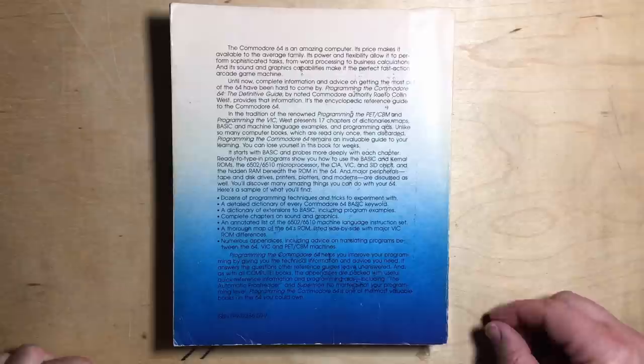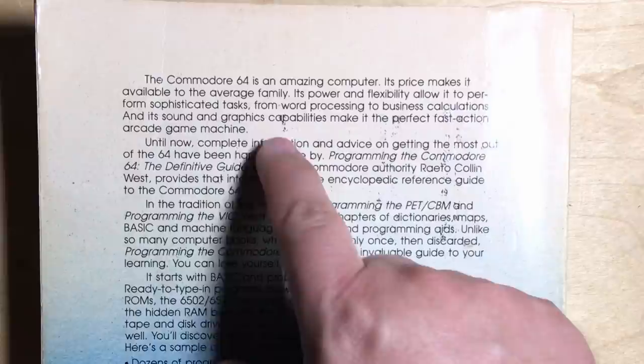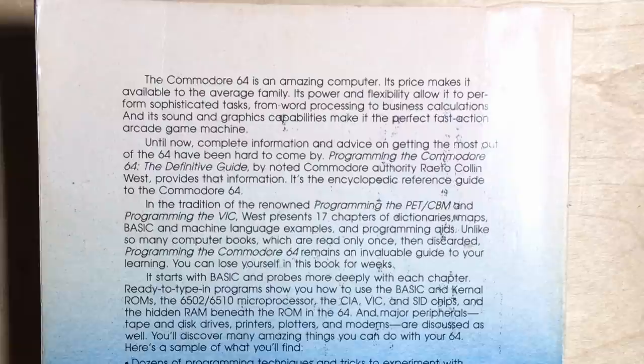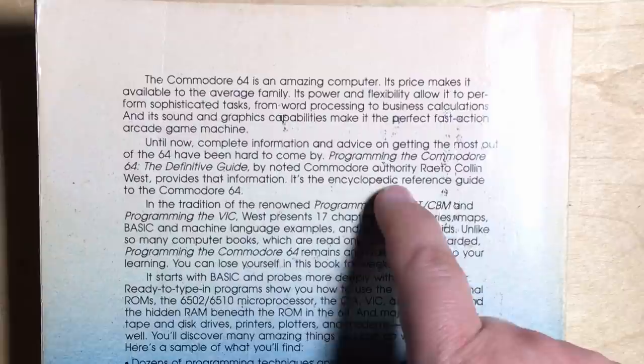Take a look at the back cover. The Commodore 64 is an amazing computer. Its price makes it available to the average family. Its power and flexibility allow it to perform sophisticated tasks, from word processing to business calculations, and its sound and graphics capabilities make it the perfect fast-action arcade game machine. Until now, complete information and advice on getting the most of the 64 have been hard to come by. Programming the Commodore 64, The Definitive Guide by noted Commodore Authority Raeto Colin West provides that information.